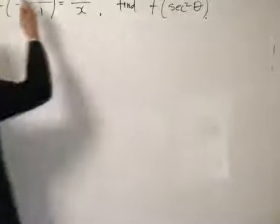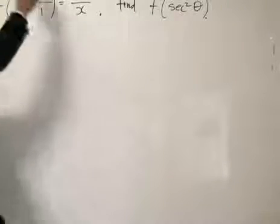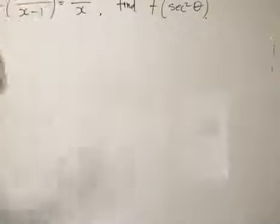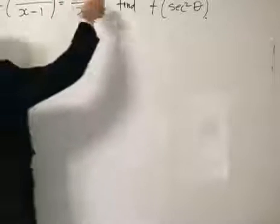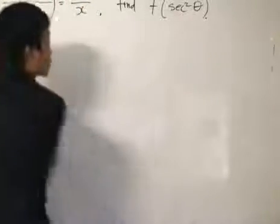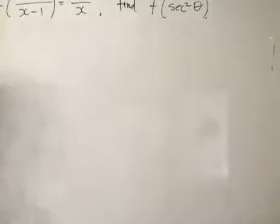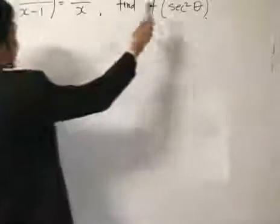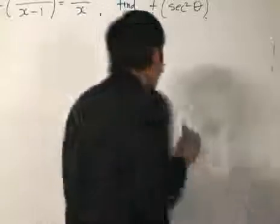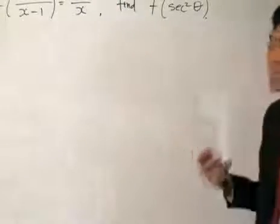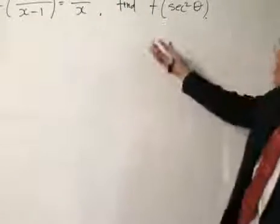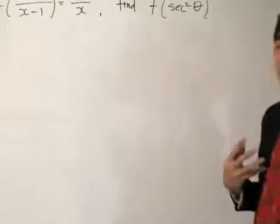We've got this function over here, and then we need to find, which is function, we put in this thing over here like that, which is very complicated in itself, is equal to this thing over here. We need to find the function of secant squared theta. Let's just see what the information is trying to tell me.